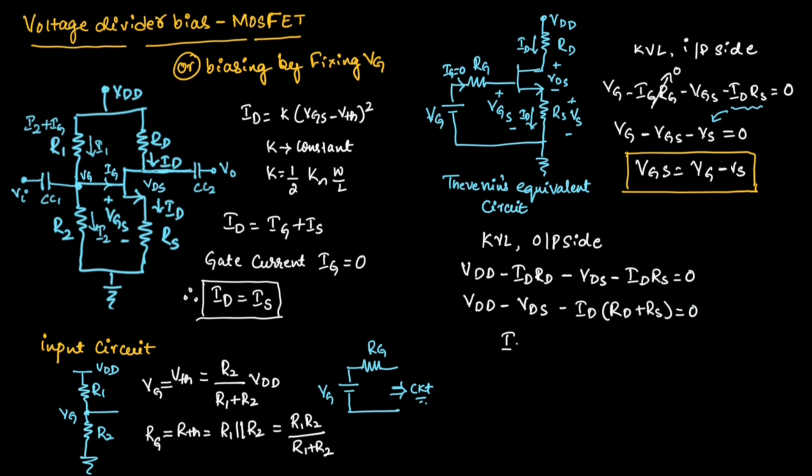From this, we can find the expression for Id which is equal to Vdd minus Vds divided by Rd plus Rs. From this equation, we can find the expression for Vds which is output voltage. So we can write Vds is equal to Vdd minus Id into Rd plus Rs. So this is the expression for Vds.